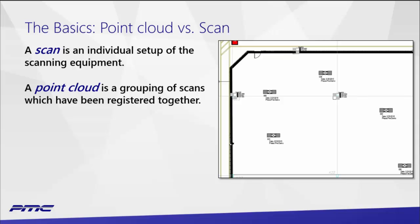When we talk about a point cloud, we're talking about a grouping of individual scans. In this drawing image on the right you can see a number of individual scan locations that were taken — those are merged together and registered into a point cloud. What we're left with is one mass that represents the building. On larger projects we sometimes split that into multiple groups, but conceptually you think of it as one group that represents the project.